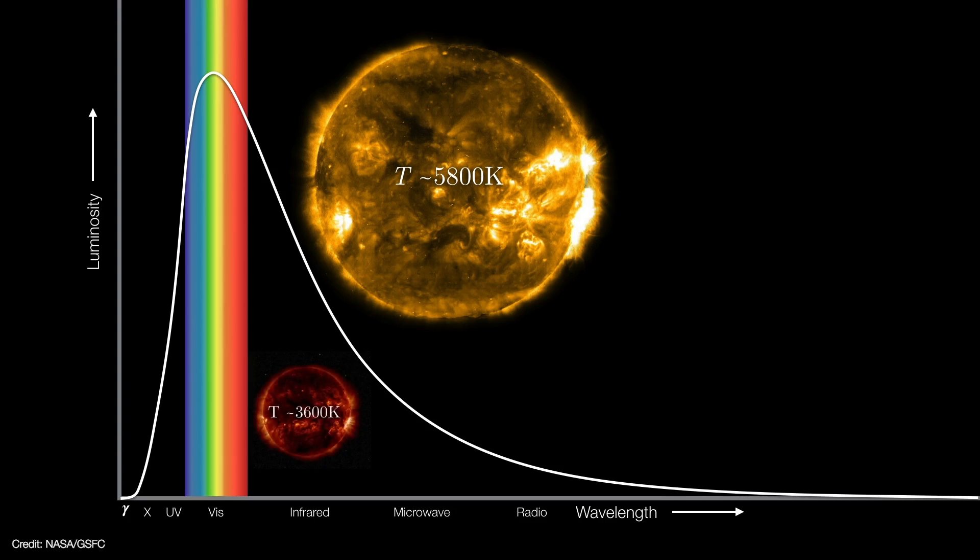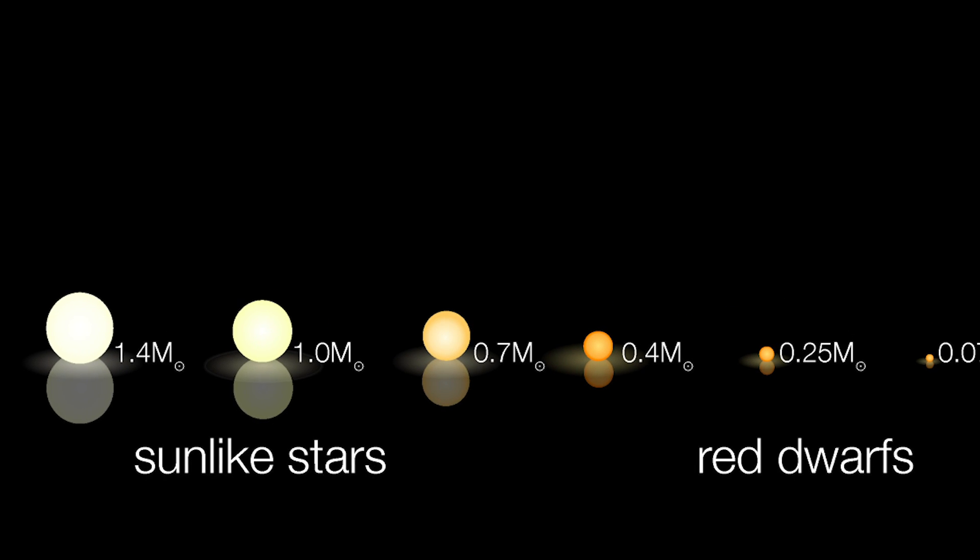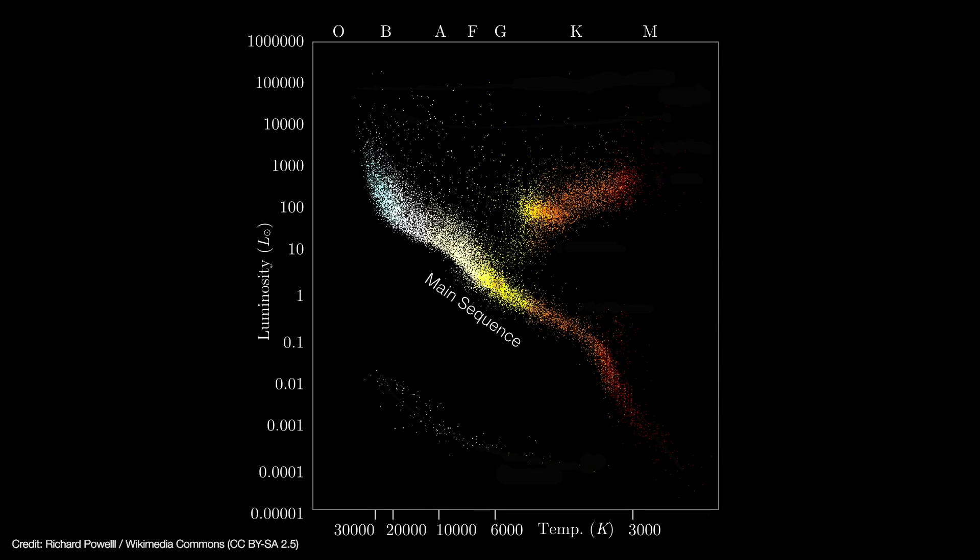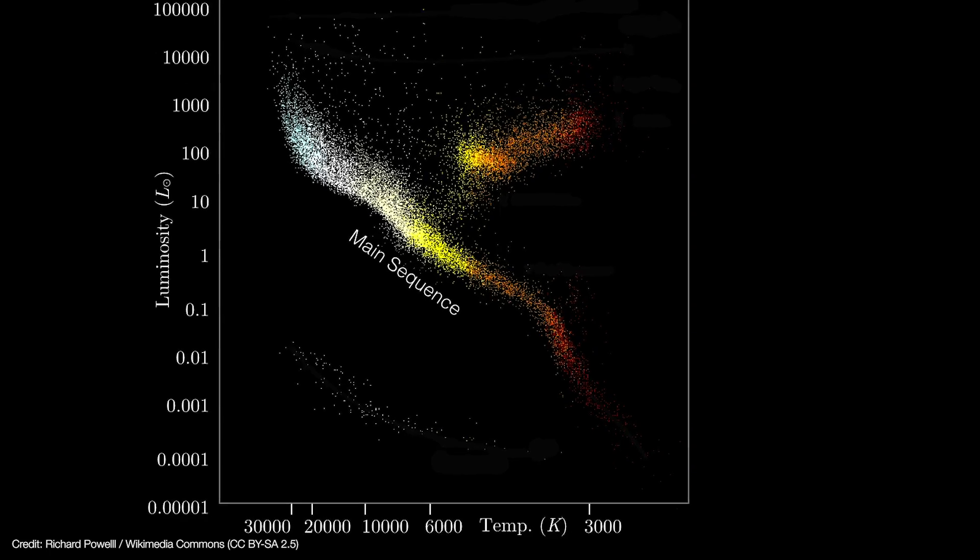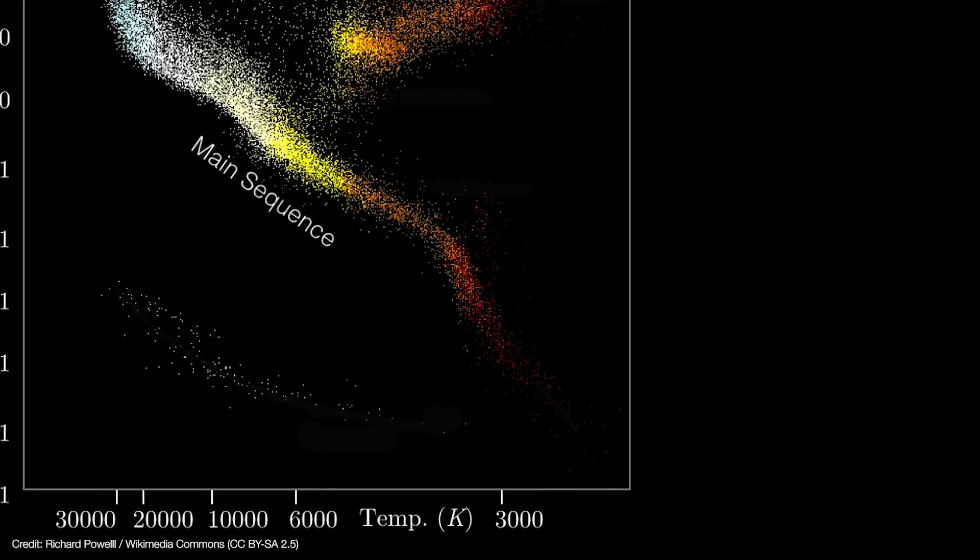As their name implies, red dwarfs are smaller and cooler than our sun, shining brightest at infrared wavelengths. They're also much less massive, about 40% the mass of our sun all the way down to 8%. In fact, the smallest and least massive red dwarfs are barely stars at all, just massive enough to sustain hydrogen fusion in their cores. When compared against other stars' luminosities and temperatures, the red dwarfs occupy the low, dim end of the main sequence of hydrogen-burning stars.